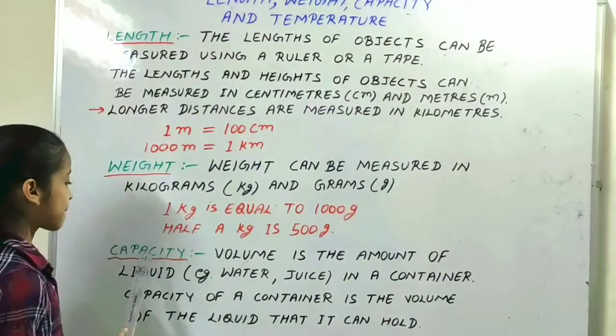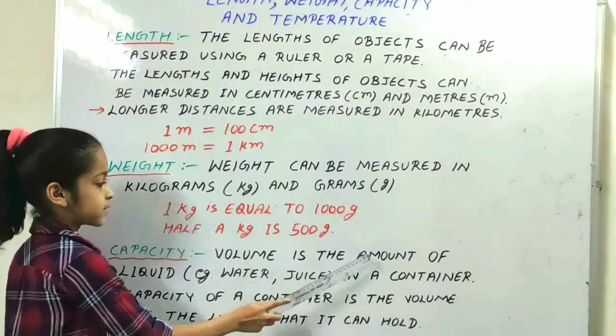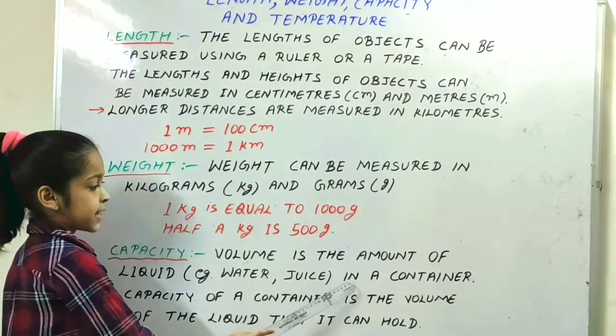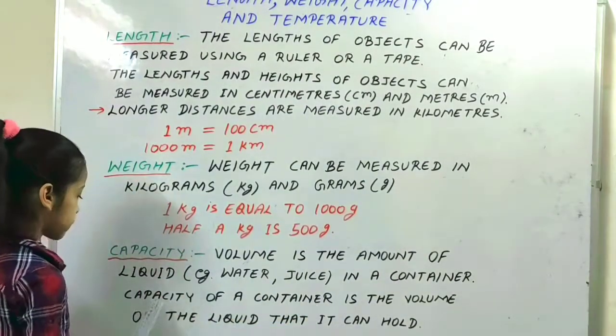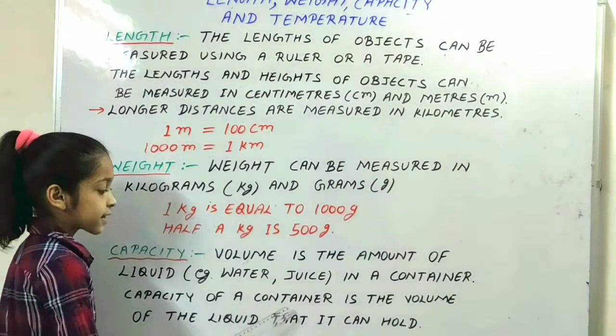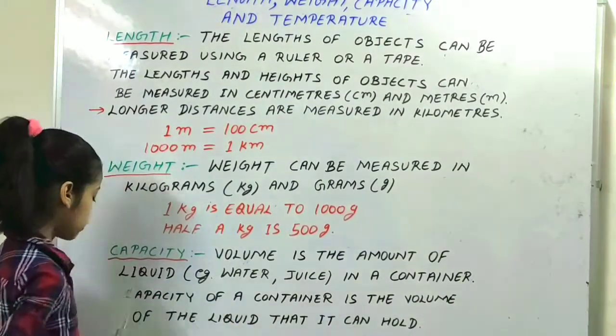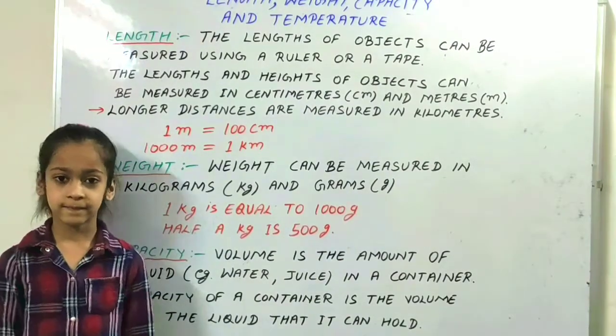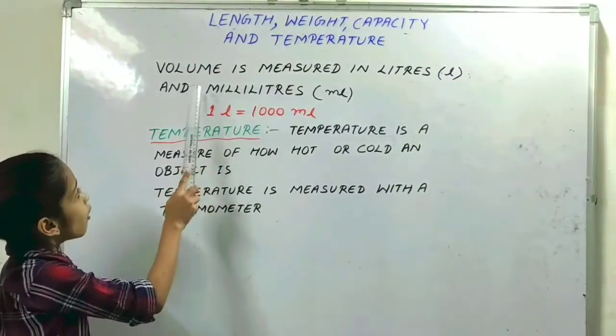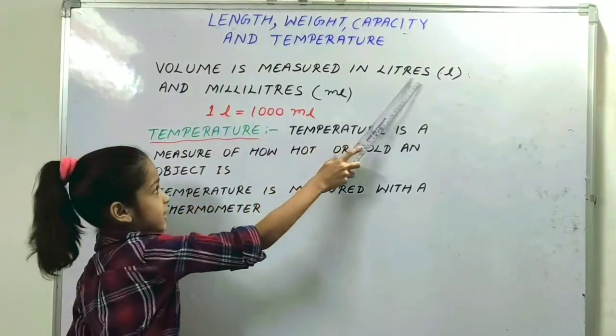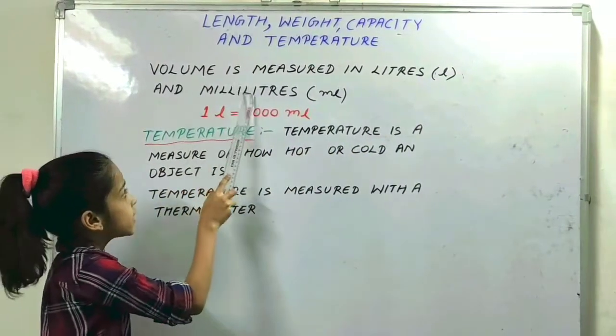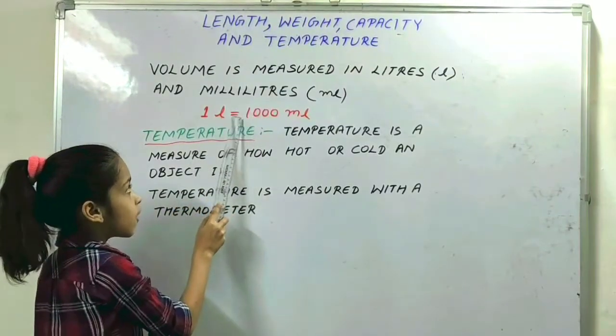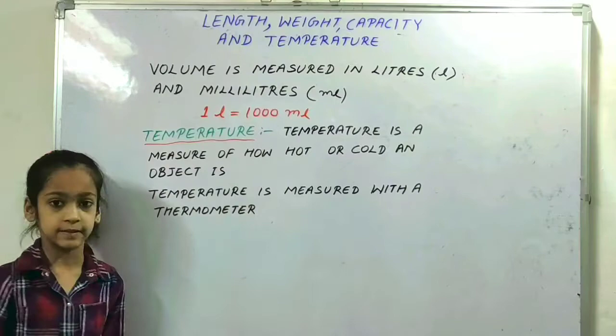Next is capacity. Volume is the amount of liquid, for example water and juice, in a container. Capacity of a container is the volume of the liquid that it can hold. Volume is measured in liters and milliliters. So here, 1 liter means 1000 milliliters.